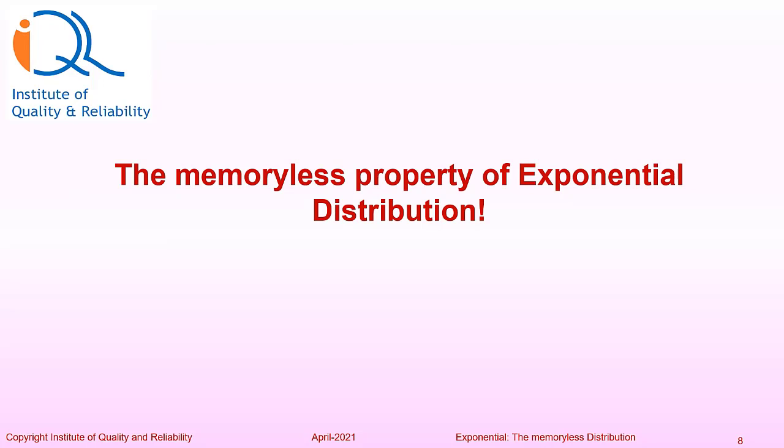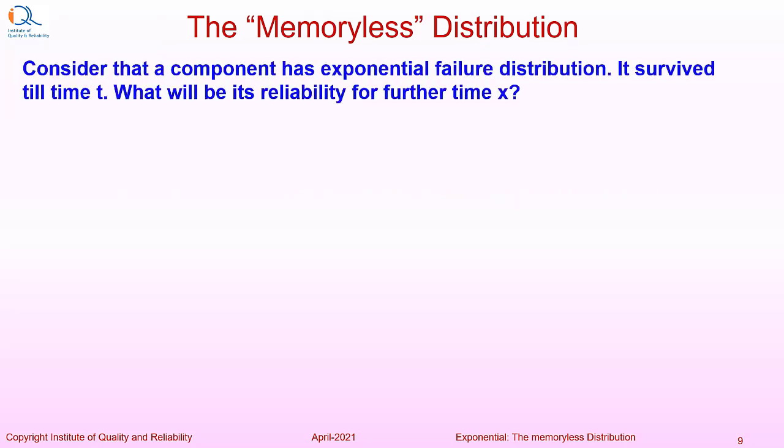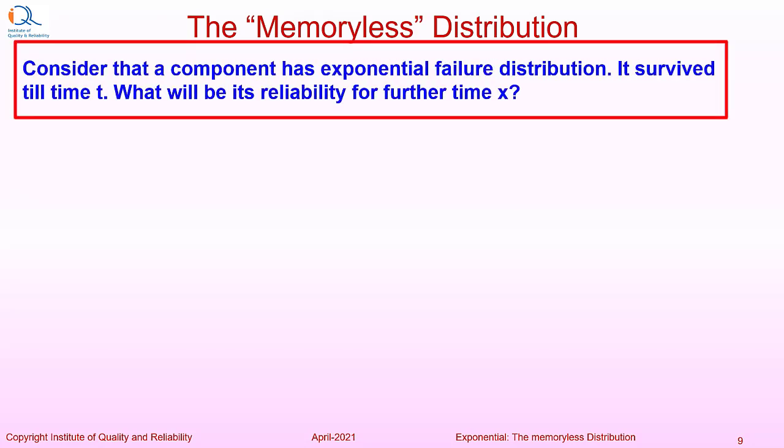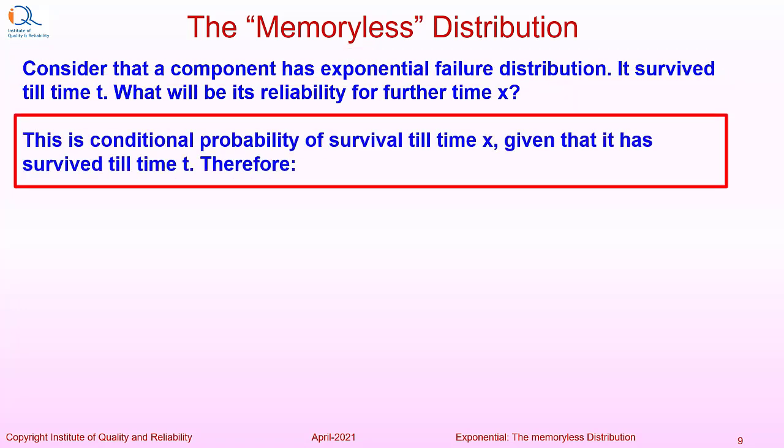Now, let us look at the memoryless property of exponential distribution. Consider that a component has exponential failure distribution. It survived till time t. What will be its reliability for further time interval of x? This is conditional probability of survival till time x, given that it has survived till time t.